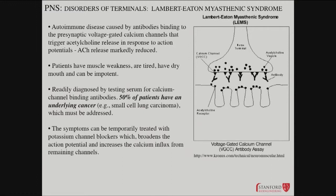If you can eradicate the cancer, the symptoms go away. Along the path to finding the cancer and removing it, you can ameliorate symptoms by blocking potassium channels. Potassium channels bring the membrane potential back at the end of each action potential — if you impair their function, you get a longer, broadened action potential, which means more opportunity for calcium to come in through channels that are still active. This ends up reducing the symptoms. So at different steps along the pathway, you get these very characteristic diseases that help us understand the core function of these structures.